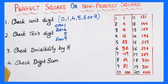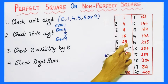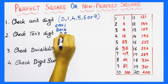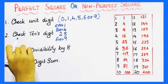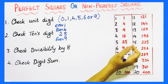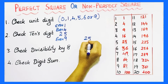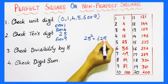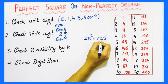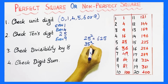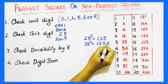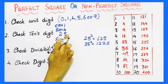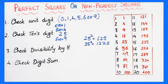If you look at a perfect square with the unit digit 5, its tens place will always be 2. For example, 25 squared is 625 — unit digit is 5, tens place is 2. And 35 squared is 1225 — unit digit is 5, tens place is 2. So if the unit digit is 5, its tens place will always be 2.